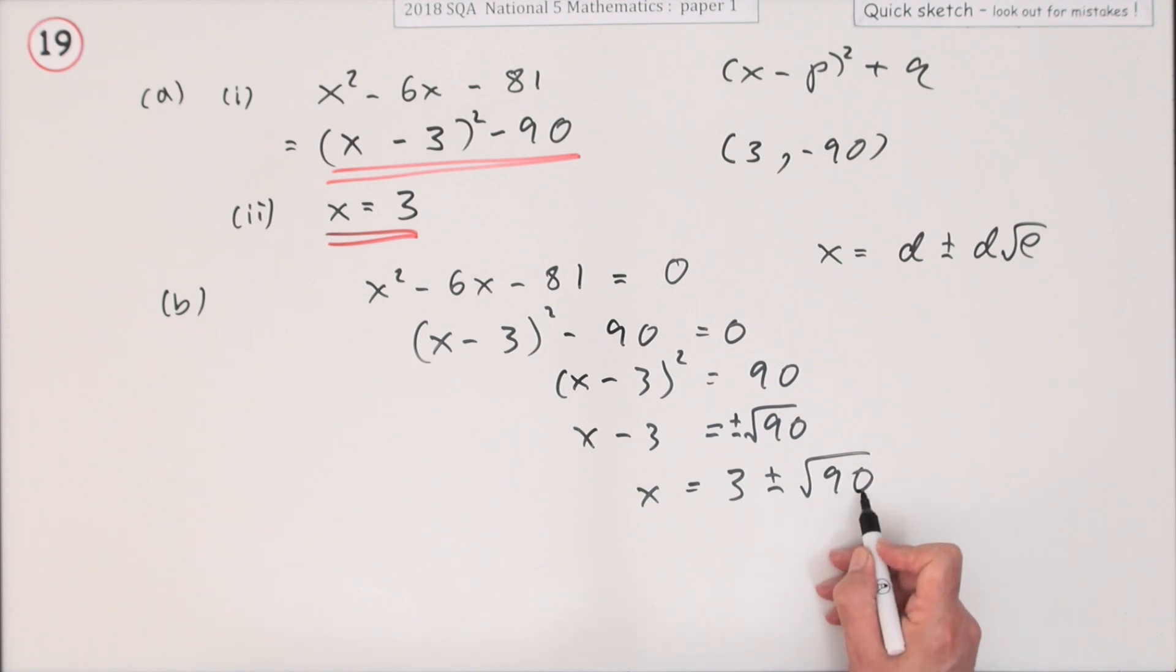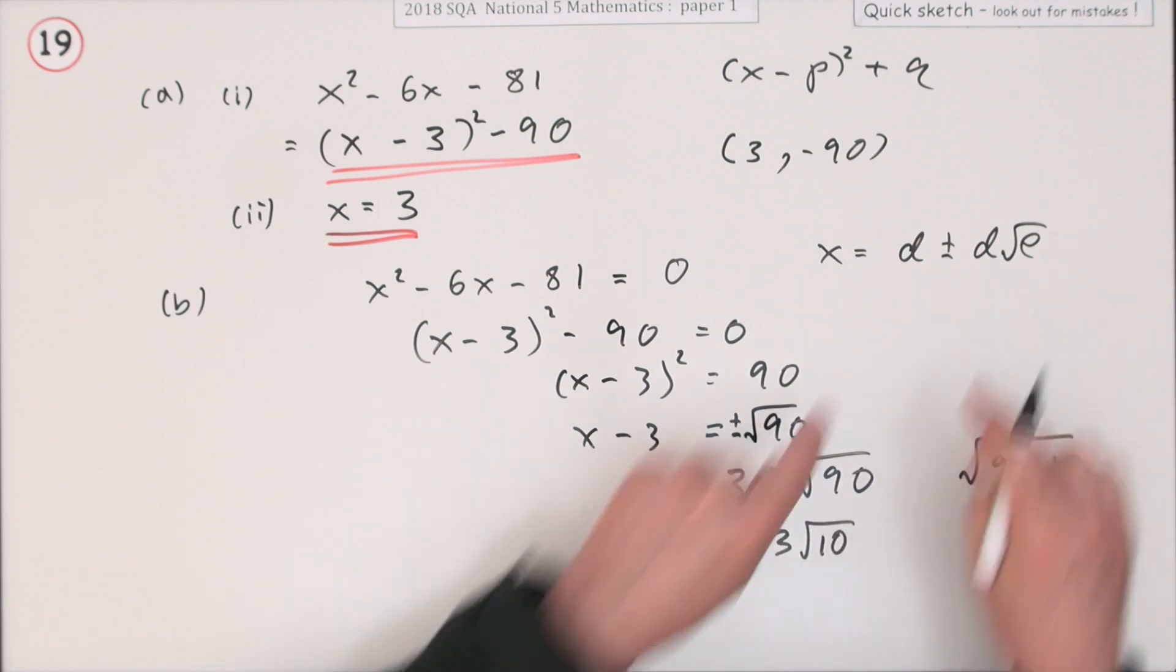Now just the case of can you simplify that at all? Well that's 9 times 10. I'll do it at the side. 90 is 9 times 10 and 10 doesn't get any simpler. So that's the same as root 9 times root 10. So that's 3 root 10. So finally you've got x equals 3 plus or minus 3 root 10. That's of this form.